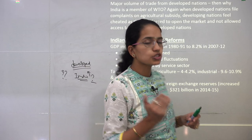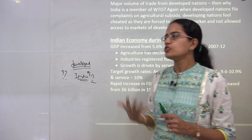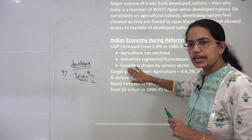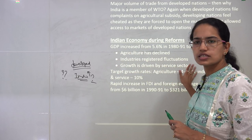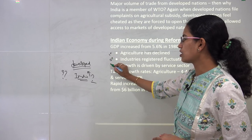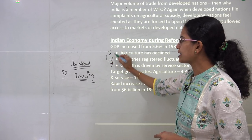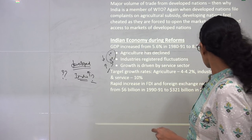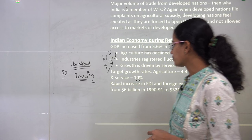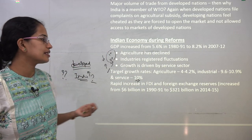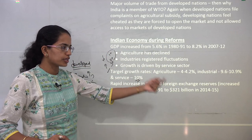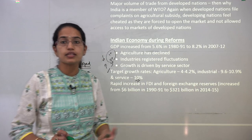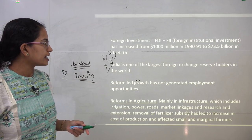After 1991, the agriculture and industry sectors declined; however, there has been substantial growth in the service sector. Of the three sectors — primary, secondary, and tertiary — the primary and secondary have declined while the tertiary registered significant growth of around 10 percent. Foreign direct investment and foreign exchange reserves have increased substantially — from $6 billion to nearly $321 billion — a huge jump for India.